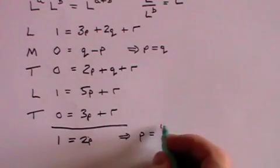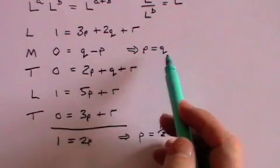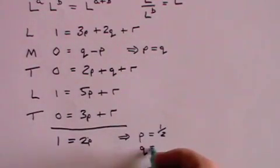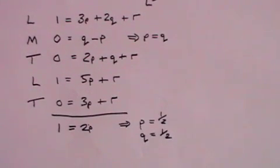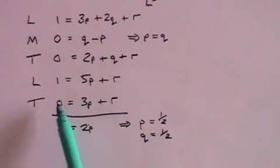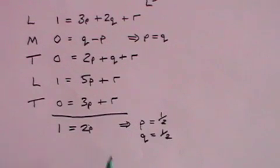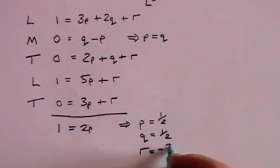So p equals 1 half. So now we've worked out what p is, but p equals q, so we also know what q is, 1 half. Now all we have to do is to substitute in this equation, so 3 halves plus r equals 0. Well if 3 halves plus r equals 0, that must mean that r equals minus 3 halves.